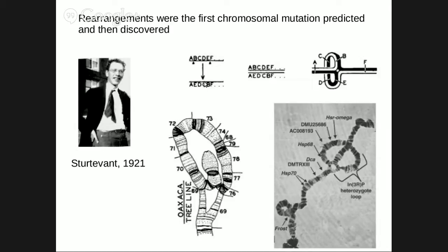They share some markers, but the linkage disequilibrium gave different distances, so the order of the markers was different. And the difference was that B, C, D, E was inverted. Sturtevant, in 1921, predicted that there was a mutation of this — at that time it was an abstract object carrying genes — and that mutation should be an inversion. I think that was the very first mutation that was predicted on the hereditary material.